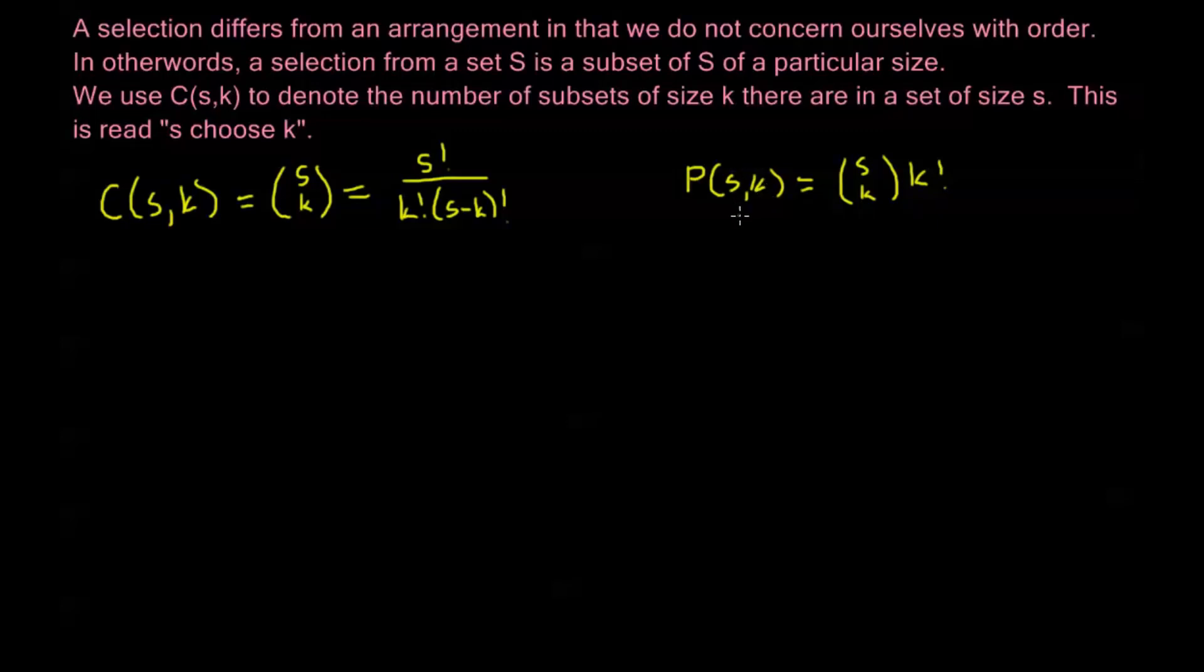So that permutation is going to be, or in other words there's going to be K factorial permutations for every one selection. For every one selection I can take that subset that I've selected and I can permute it K factorial ways, and each of those are a different permutation. So dividing both sides by K factorial we get our formula here.